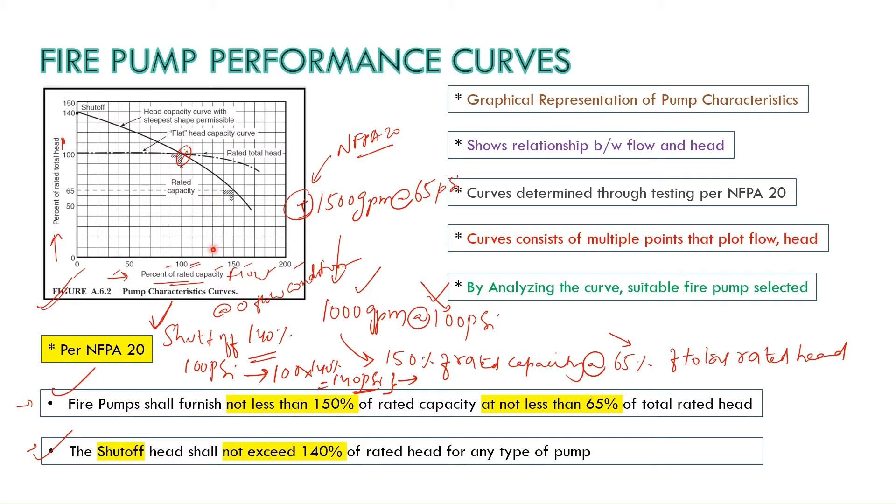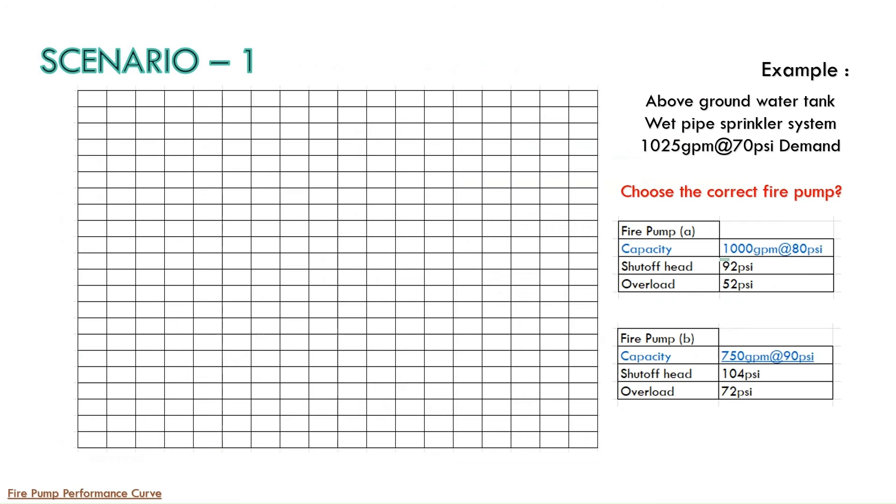This is the most important slide to be discussed in order to select the proper fire pump. So you need to watch the full video from here. So you have an example shown on your screen. We have the wet pipe sprinkler system installed in this particular project and the system demand based on the hydraulic calculation is 1025 GPM at 70 PSI.